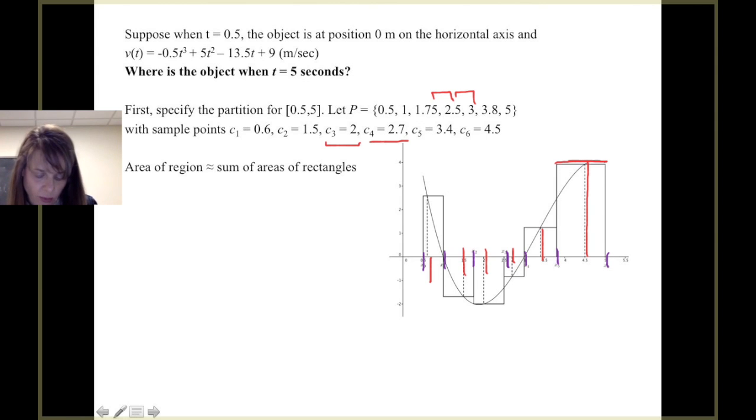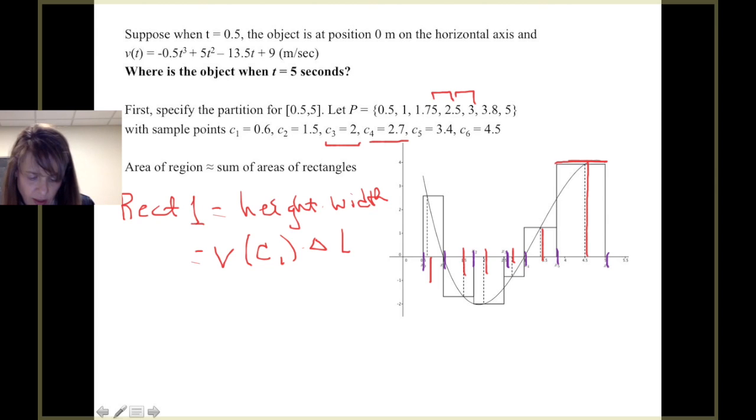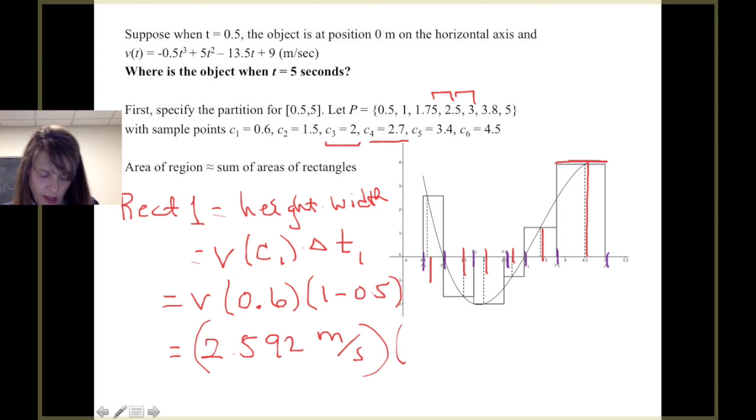And we're using the value of the function or the velocity at those points to give us the heights of those rectangles. So for example, for our first rectangle, I've got the height times the width. And our height comes by evaluating the velocity function at our first sample point. Our width comes from our change in t values on that first subinterval. So we're taking the velocity function and we're evaluating it at c_1, which is 0.6. And we're multiplying it by the width of that first subinterval. So that's 1 - 1/2.